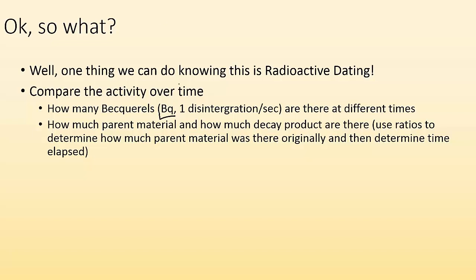We can also look at how much parent material and how much decay product there are using the ratios to determine how much parent material was there originally, and then determine the time elapsed. So if I had X and it broke down into Y, I can measure how much Y and how much X I have at a certain time. I can backtrack to figure out how much X I started with, so I can figure out how much time must have gone by.